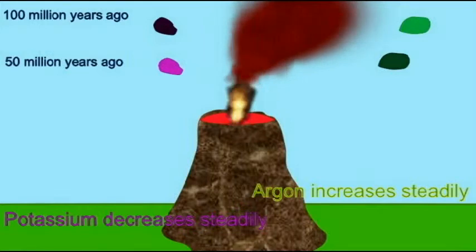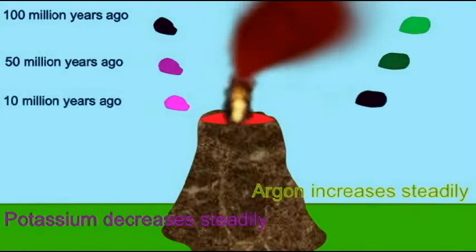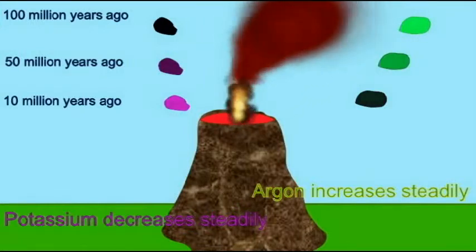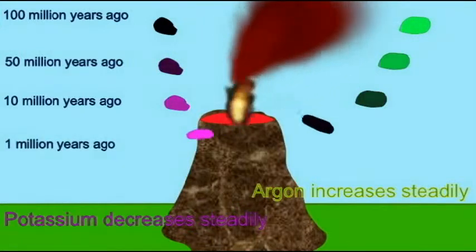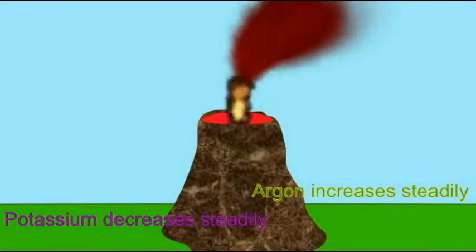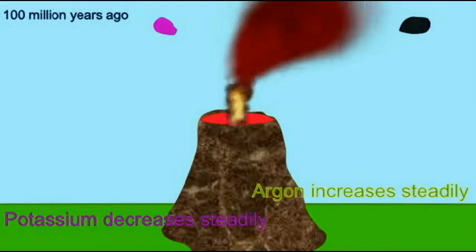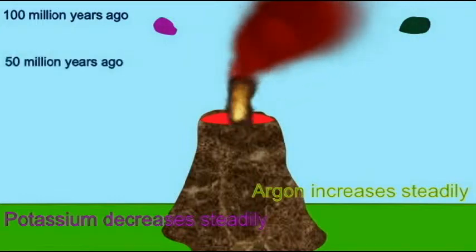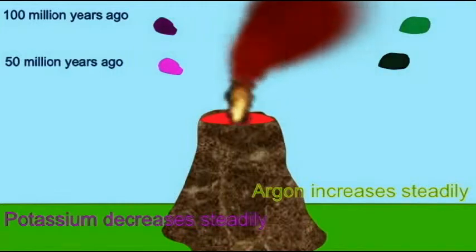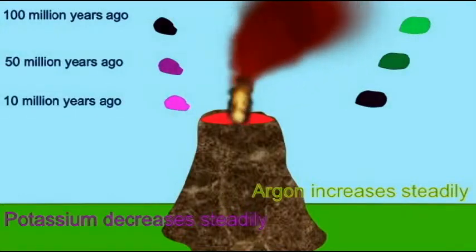If all rocks begin with a comparable amount of potassium, indicated here with the color pink, and with no argon, indicated with black, you can see the difference in the rocks here dated 100 million, 50 million, 10 million years old, and rocks formed presently. The older the rock, the more of the potassium which is lost — the pink color goes to black. And if measuring argon, the black color indicating no argon initially then becomes a darker green the more time which elapses.